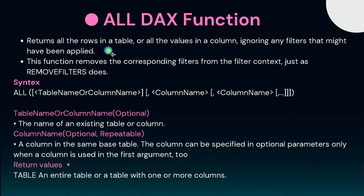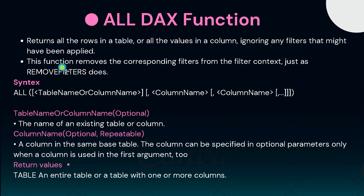Sometimes when you are doing calculations, you don't want any filter applied on a particular table or column. At that time you apply the ALL DAX function. When you apply ALL in a calculation, it first removes all filters from that table or column, then performs the calculation on the entire data of the table. This function removes the corresponding filters from the filter context, just as REMOVEFILTERS does.